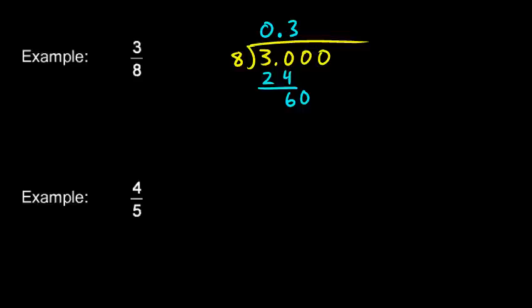8 will go into 60 seven times. 7 times 8 is 56. And then I subtract, and 60 minus 56 is 4. And then I bring this 0 down, and I have 40. And 8 goes into 40 exactly five times. 8 times 5 is 40. I'm done at that point. 0.375 is my answer.